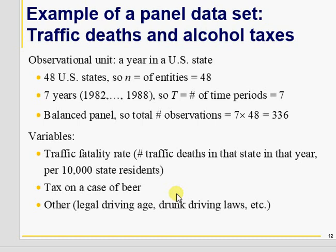Let's consider an example of how panel data resolves the omitted variable bias issue. This is chapter 10 from Stock and Watson's Introduction to Econometrics. We have data on 48 US states over seven years — a balanced panel with 336 total observations. The question is: does beer tax lead to a lower traffic fatality rate, measured as traffic deaths per 10,000 state residents?